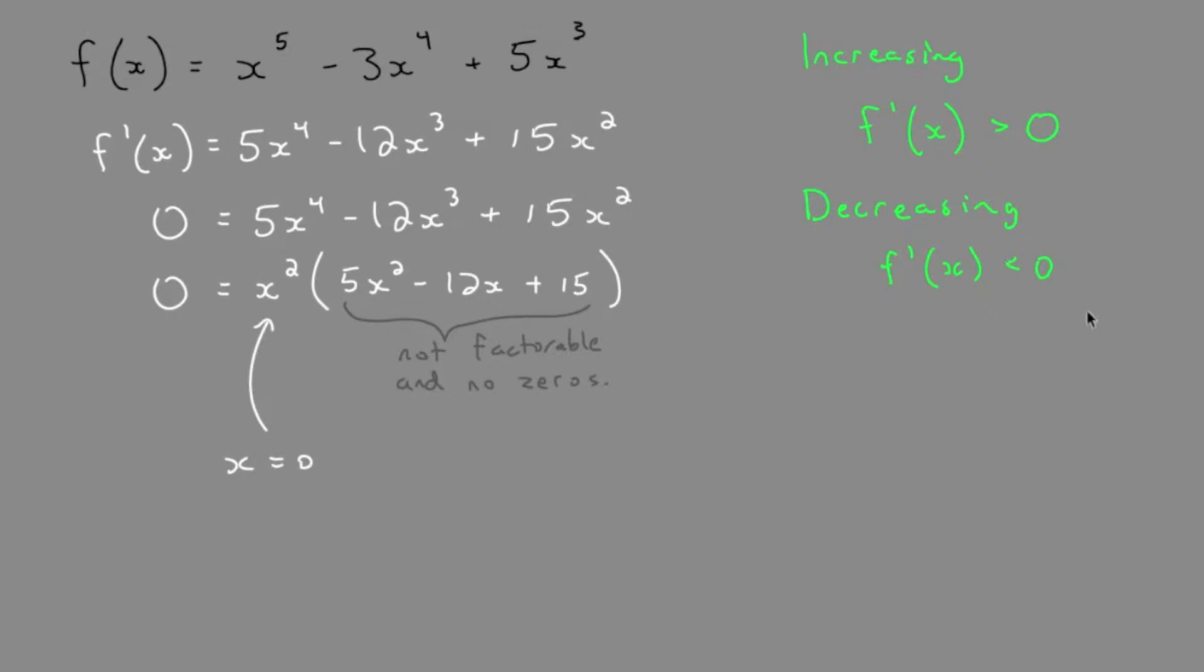So what do we plug in to determine if it's increasing or decreasing for x? What do we use for x? Well, we use the stationary point. We've determined that the stationary point is located at x equals 0.